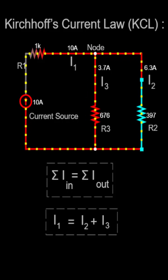To express KCL mathematically, we use the equation: the sum of currents flowing into the node, summation of I in, is equal to the sum of currents flowing out of the node, summation of I out.